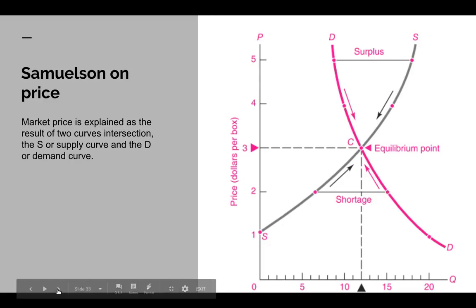What's the price theory you get in Samuelson? Well, if you've ever done an economics course, you'll be familiar with this diagram. Price, according to Samuelson, is caused when you get an intersection between two curves, the S or supply curve, and the D or demand curve. Along the x-axis here, like the one I had for oil, you have the quantity supplied, or quantity being produced. And the y-axis is the price.